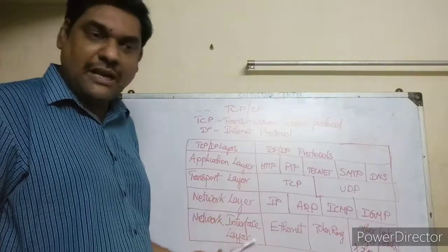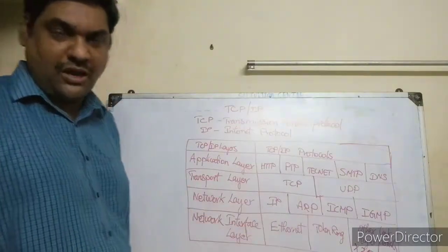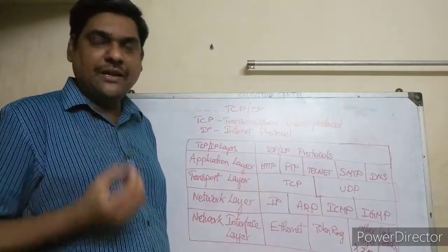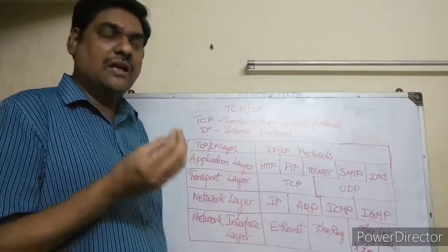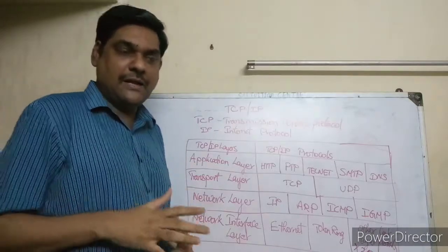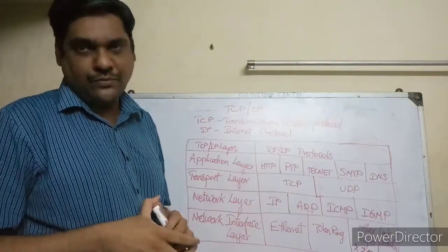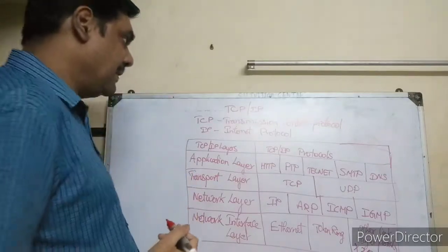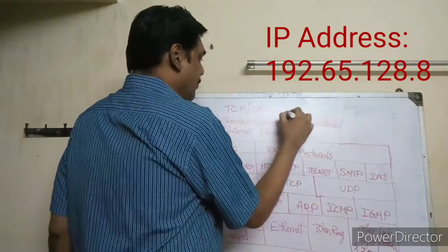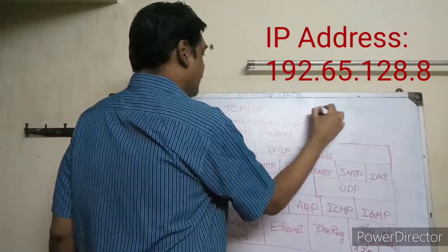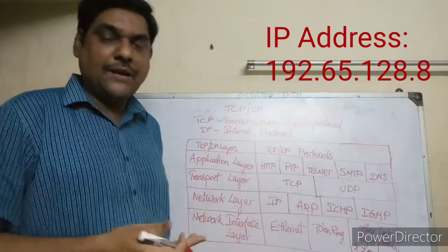The Network layer contains four protocols. The first is IP — Internet Protocol — which handles data packets and attaches a destination address to each packet. This destination address is called an IP address. For example, an IP address looks like 192.65.128.8. This will be covered in more detail in the next chapter.